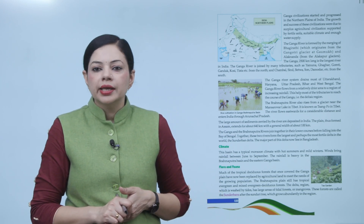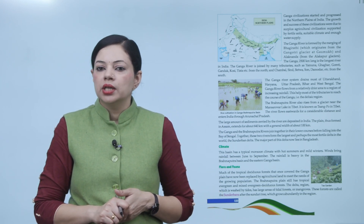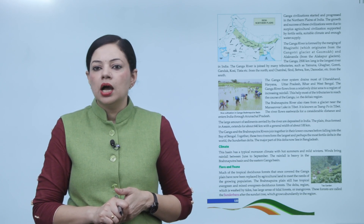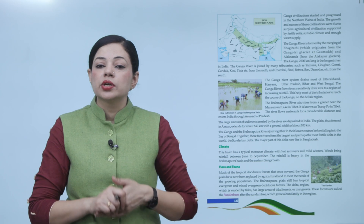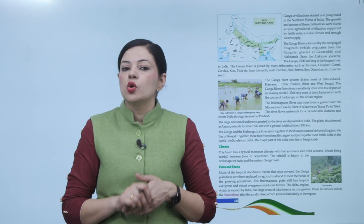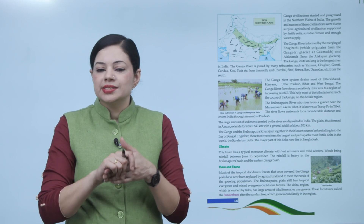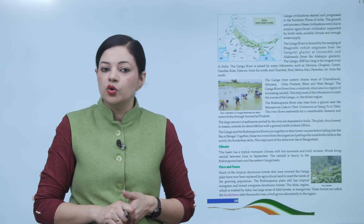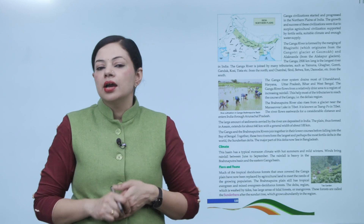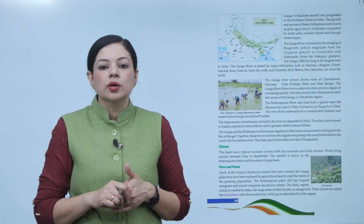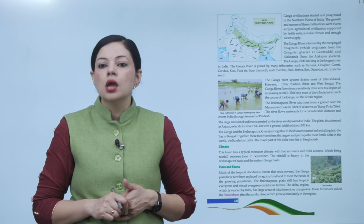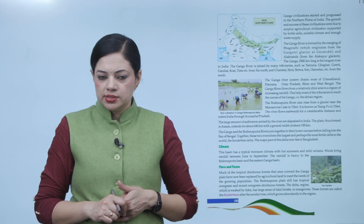The Ganga river is formed by the merging of Bhagirathi, which originates from the Gangotri glacier at Gomukh, and Alaknanda from the Alkapuri glaciers. The Ganga, 2500 km long, is the longest river in India. The Ganga river is joined by many tributaries such as Yamuna, Ghaghra, Gomti, Gandak, Kosi, Tista, etc. from the north, and the Chambal, Sindh, Betwa, Son, Damodar, etc. from the south.